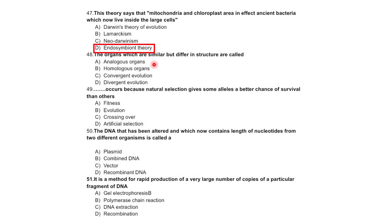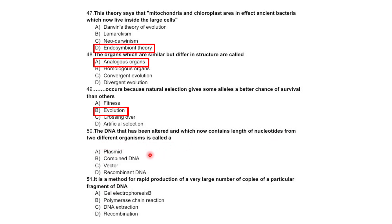Which structures are similar but different — analogous structures? Natural selection gives some organisms a better chance of survival than others — this is called fitness, evolution, crossing over, or artificial selection. Recombinant DNA is DNA that has been altered and now contains nucleotides from two different organisms.